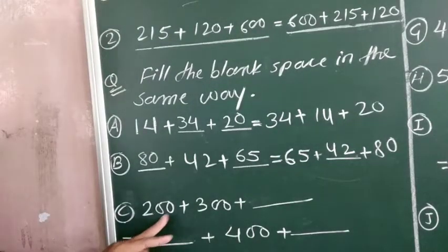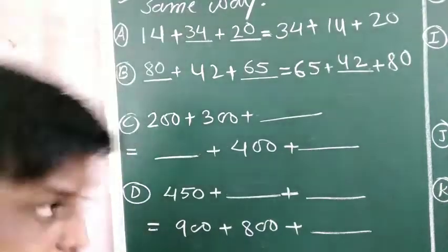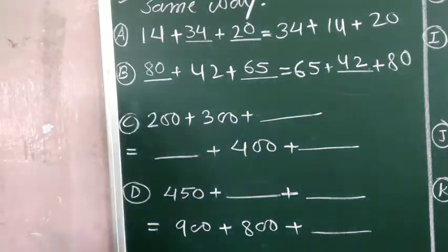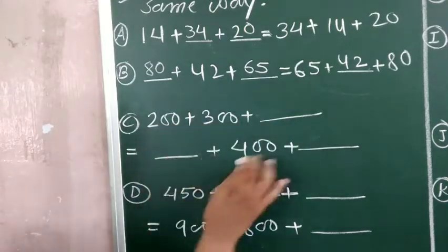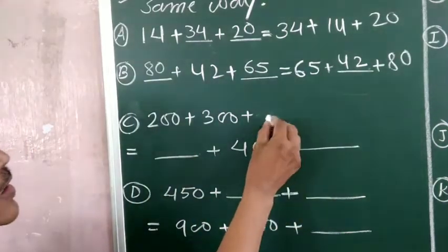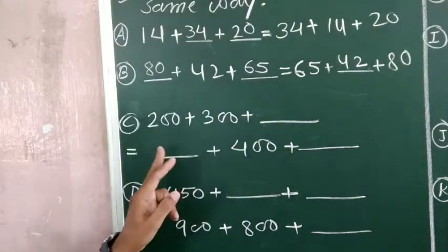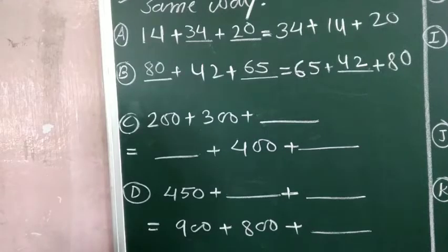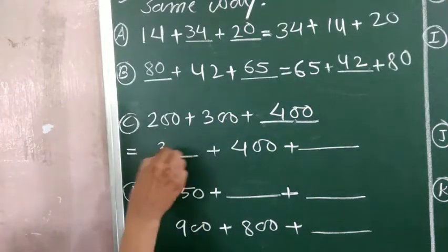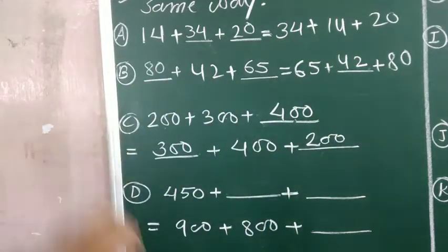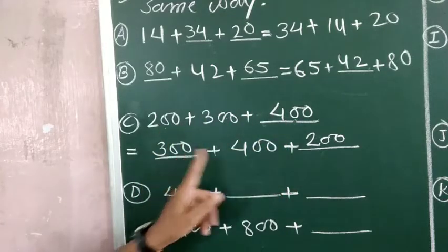Next: 200 plus 300 plus dash equals 400 plus 300. These are three numbers on each side. The three numbers are 200, 300, and 400. So on the left side you have 200 plus 300 plus 400, and on the right side 400 plus 300 plus 200 — same three numbers in different order.